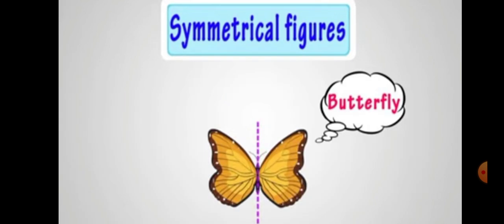Next example is a butterfly. Here you can see a line of symmetry, and exactly on both sides we have the same shape. So this is also a symmetrical figure.